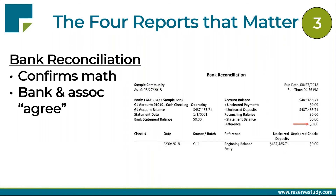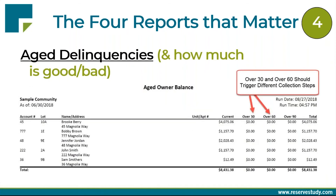The bank reconciliation report doesn't often get added to monthly financial packages, but its job is to confirm that what's in the bank matches what's shown on the financial reports. This is a place where fraud can happen if you don't include it. One example: a management company in Connecticut where the controller stole over two million dollars. They didn't use bank reconciliation reports, there were no bank statements on the financials, and the controller had doctored the financial reports. The fourth report is aged delinquencies, which drives your collection process — you look at who's at 30, 60, and 90 days to ensure they're following your collection policy.